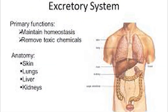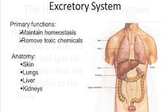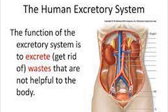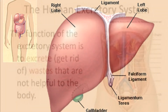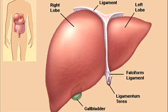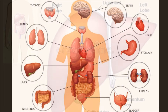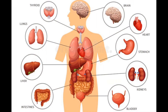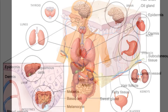Accessory excretory organs — that is, the skin, lungs, liver and salivary glands. Besides kidneys, some other organs also help in the removal of waste products. They are called the accessory excretory organs. In human beings, the skin, lungs and liver are such organs.